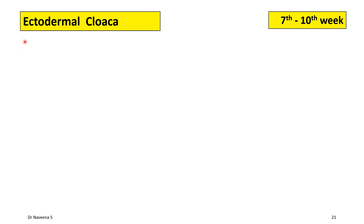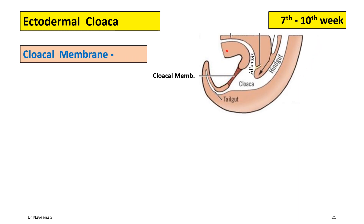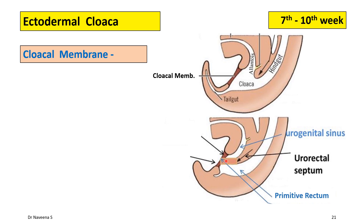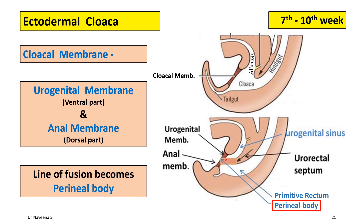Now let's see the changes occurring at the ectodermal cloaca during the seventh to tenth week. Once the urorectal septum meets the cloacal membrane, the cloacal membrane can be divided into two parts: a ventral part called the urogenital membrane and a dorsal part called the anal membrane. The urogenital membrane is related caudally with the primitive urogenital sinus, whereas the anal membrane is related caudally with the primitive rectum. The junction where the urorectal septum meets the cloacal membrane forms the perineal body, which is one of the structural supports for pelvic viscera.